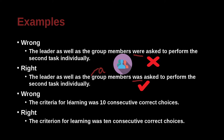'The criteria for learning was ten consecutive correct choices.' The problem here is that inside your formal writing, if the number is one through twelve, you should be spelling it out. If the number is bigger than that, then you should be writing the Arabic numeral. Otherwise, try to spell it out.